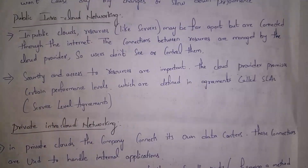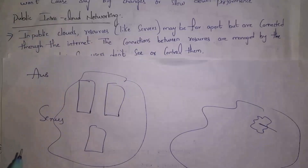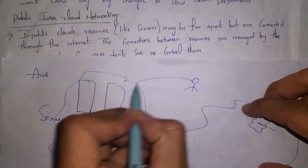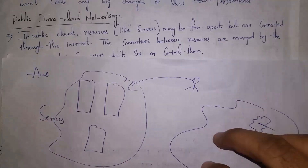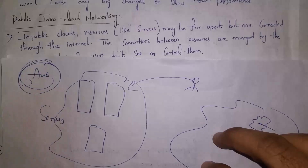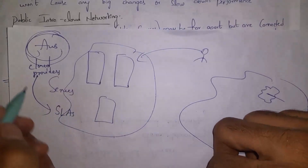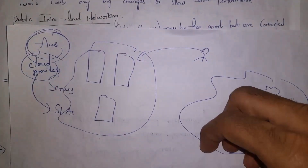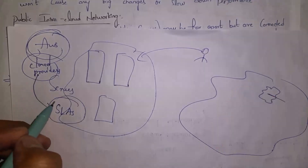Next, I will explain public intra-cloud networking. In public clouds, servers are located at the cloud provider's location, and we can use those servers by using the internet. We cannot control these servers — only cloud providers will control them. Still, our data will be secure. In service level agreements, the cloud provider promises that there will be security and resources will always be available to the user.